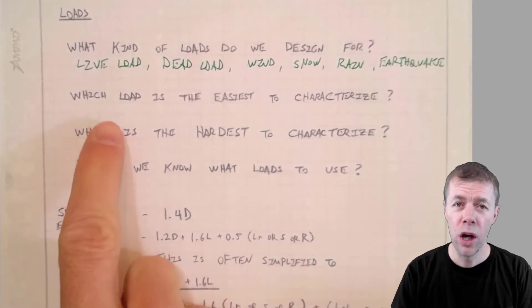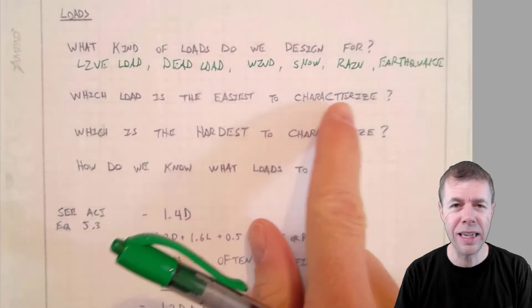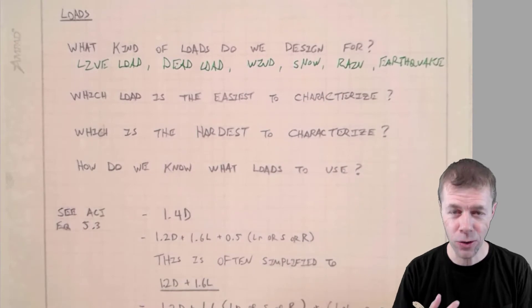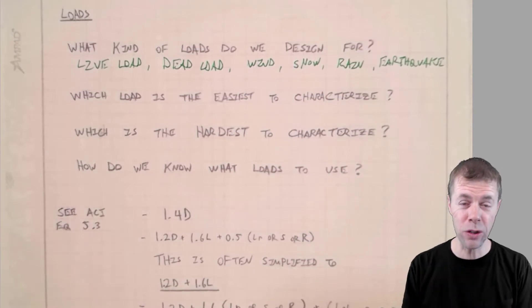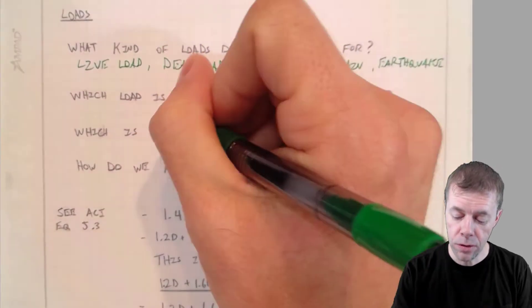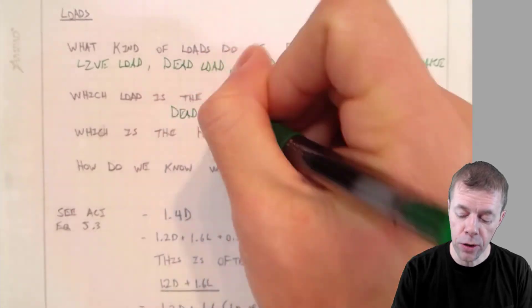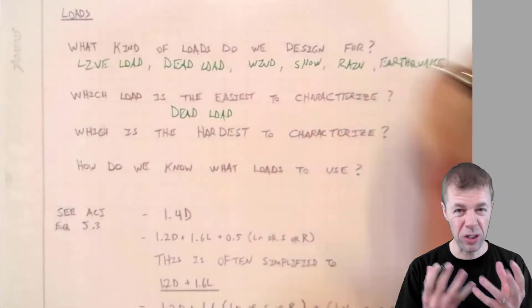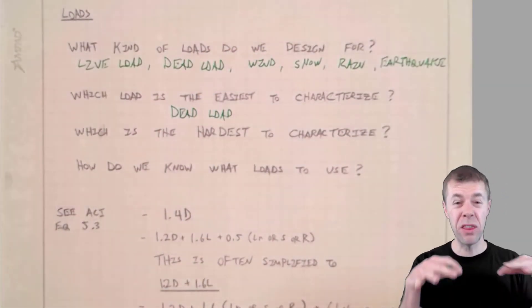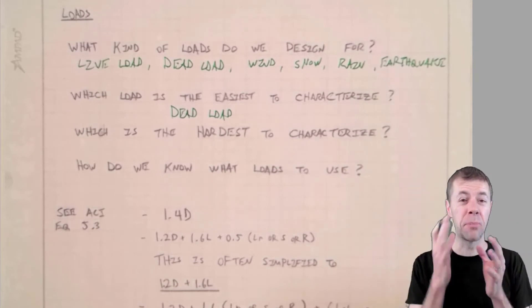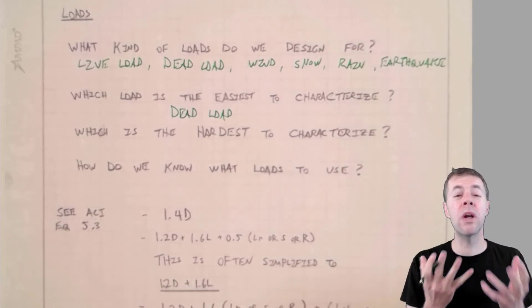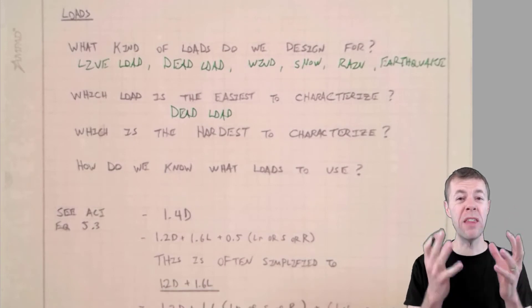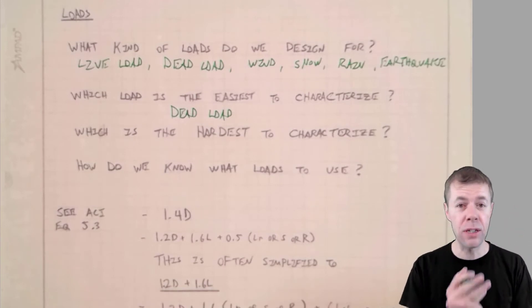So of all these loads, which one is the easiest to characterize? Well, the easiest one usually is the dead load. That's how we're going to use it for. That's like partitions, you know, maybe the carpet, maybe the bricks. Whatever you know is going to be there and probably not going to change. That's the dead load.